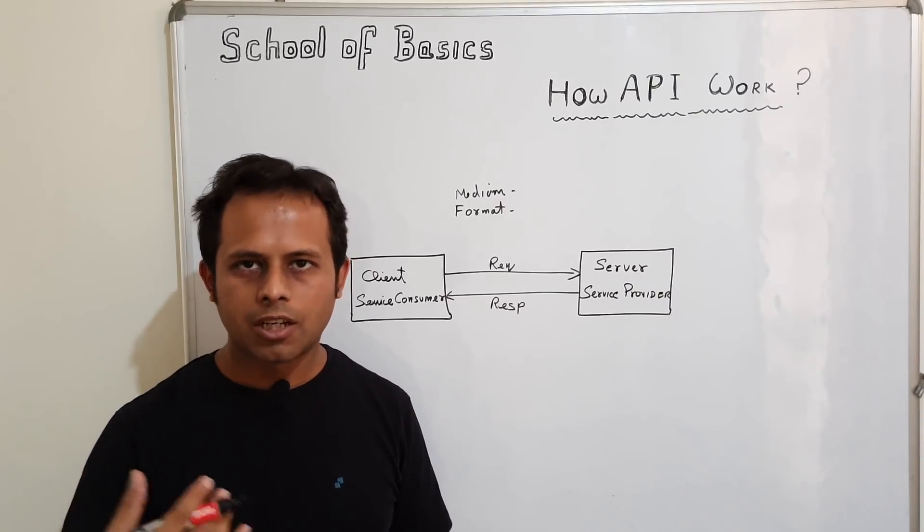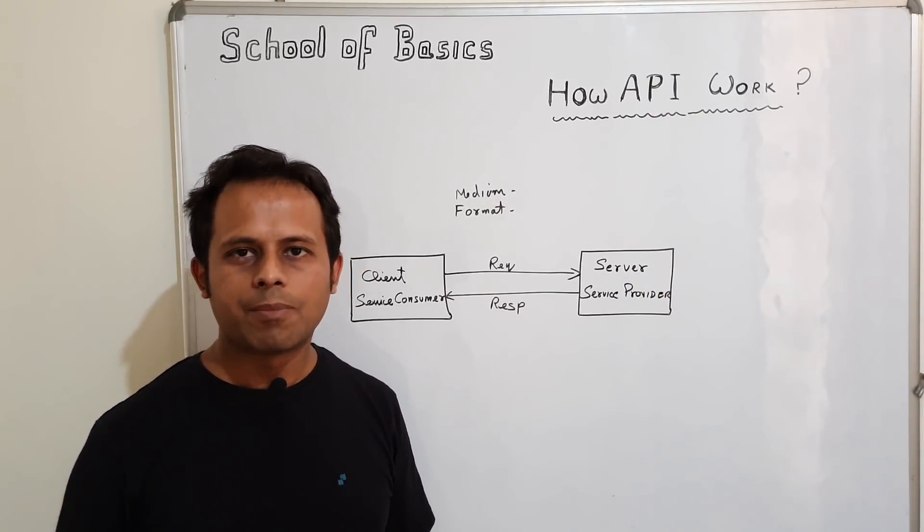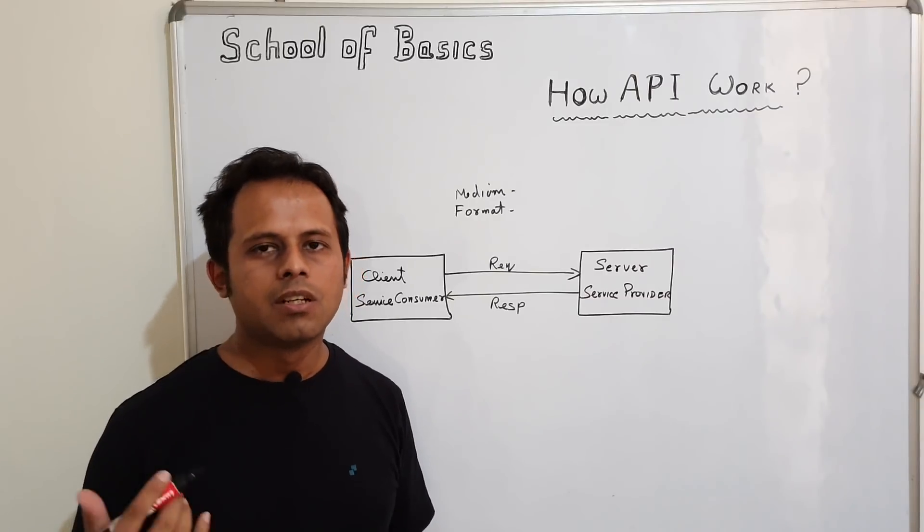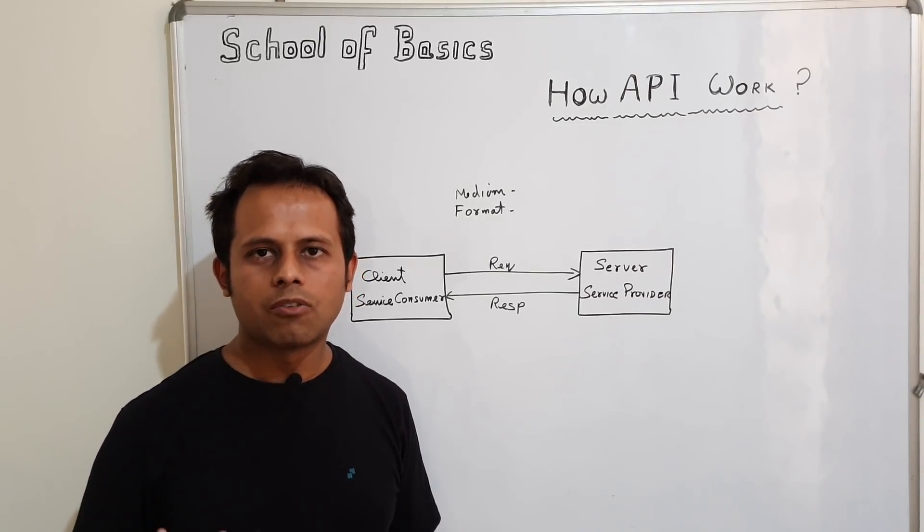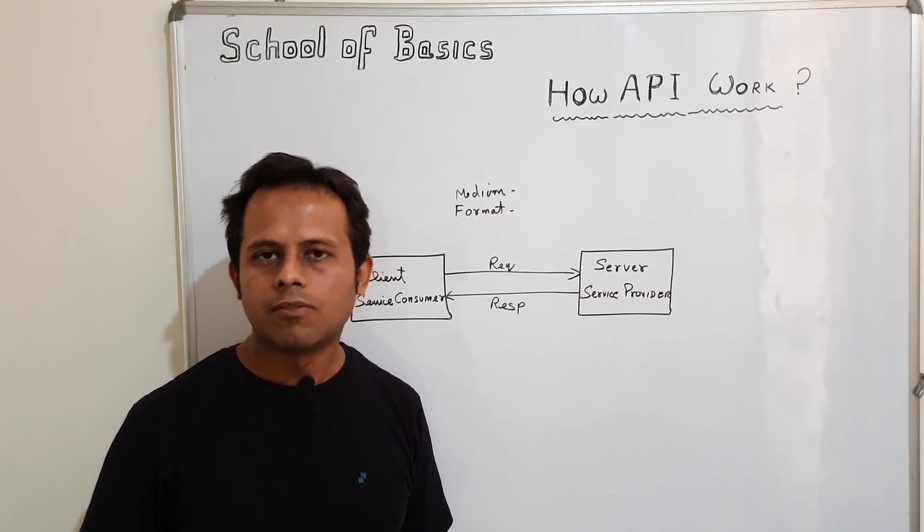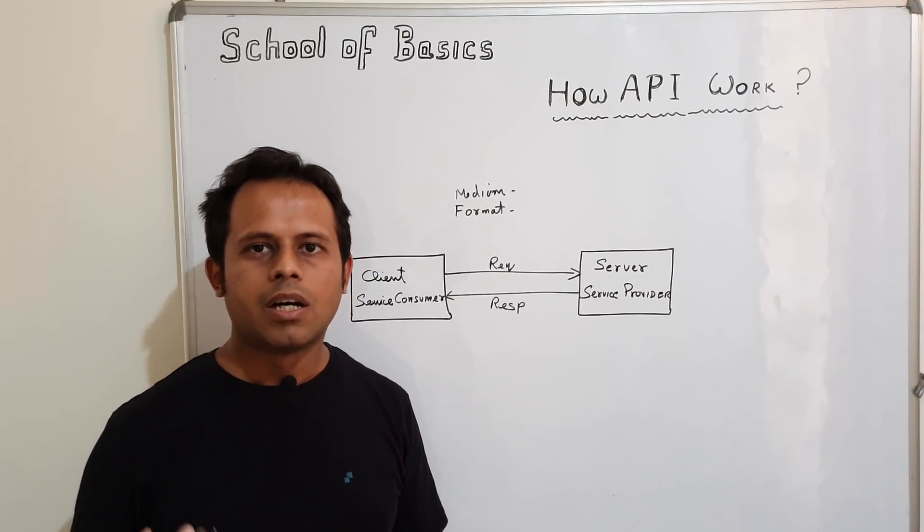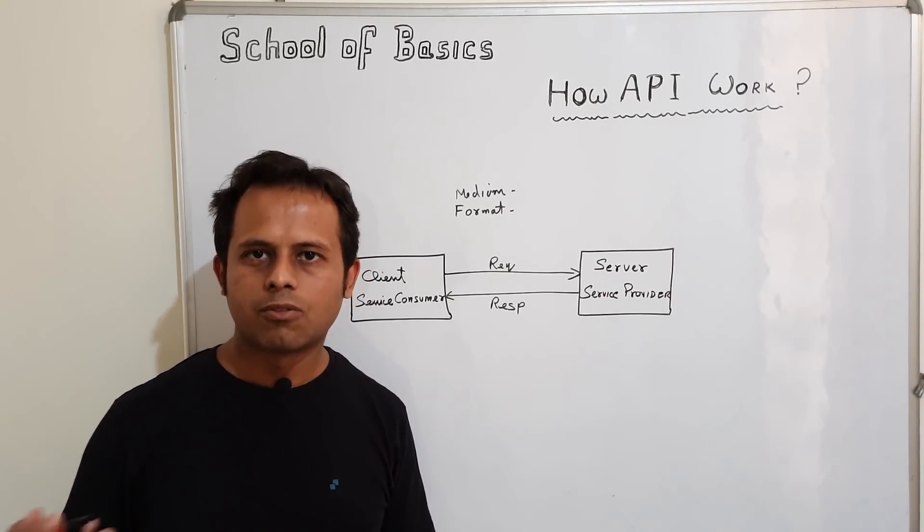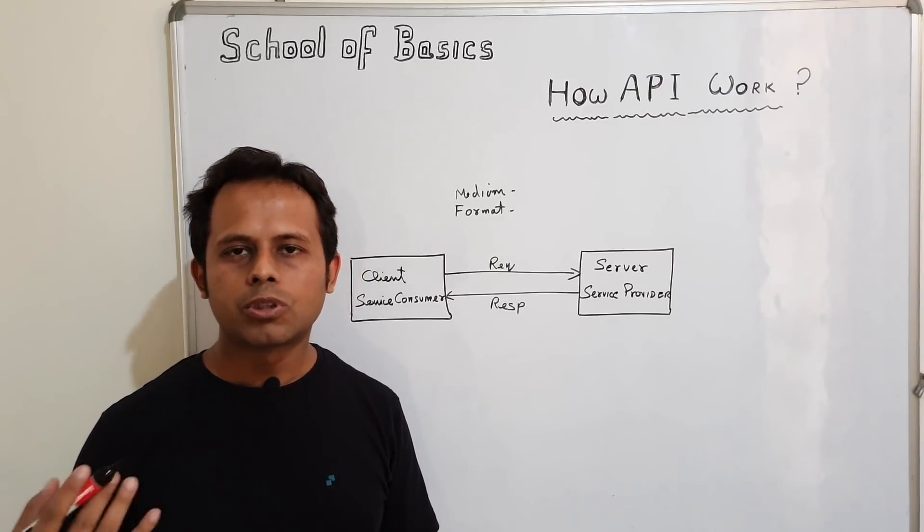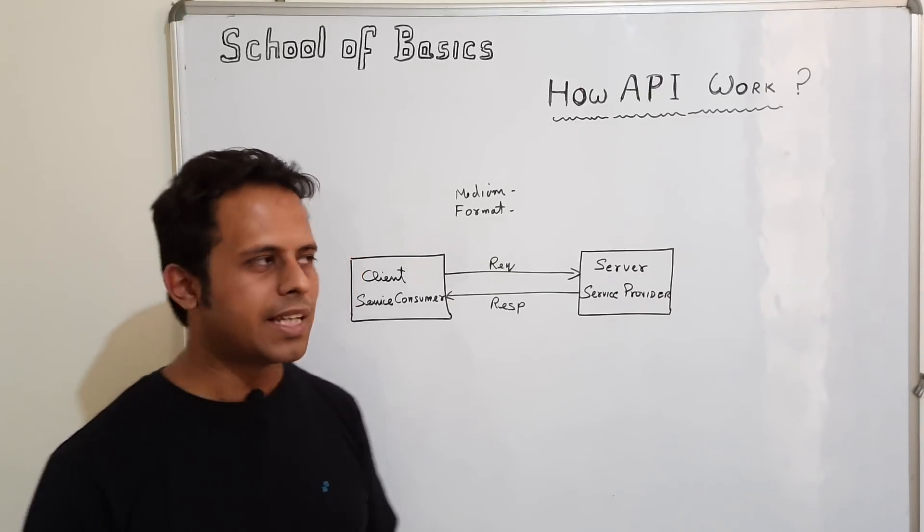There has to be a medium over which they can communicate with each other. So for example, when we talk about web services, web services are also a kind of APIs and these are services available over the web. We have different kind of web services like SOAP and RESTful web services. So here the most common medium used is HTTP.